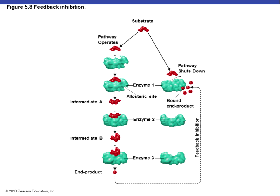You might wonder why we'd ever need competitive and non-competitive inhibition. These inhibitors help regulate enzymatic activity and save energy for the cell. Looking at this pathway: a substrate gets broken down through intermediates to an end product. At some point we have enough of that end product and it's energetically wasteful to keep making it. So the byproduct binds to the allosteric site of the enzyme and shuts the whole pathway down — this is feedback inhibition, a concept we'll return to in chapters seven and eight.